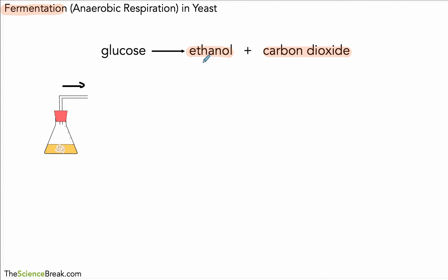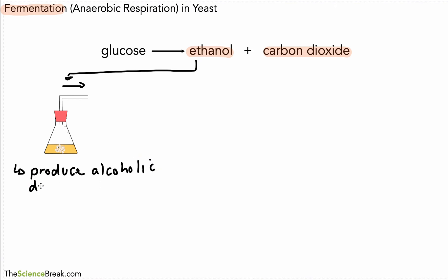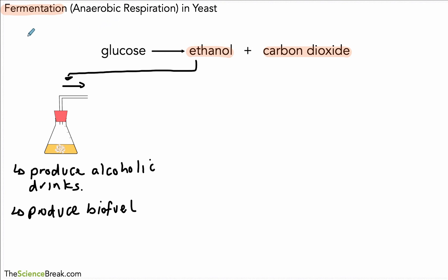Now ethanol is alcohol, so this process of fermentation can be used to produce alcoholic drinks — things like beer can be produced in this way. The ethanol can also be used as a fuel; the type of fuel we talk about is biofuel. So this ethanol that's produced can be burnt to produce a fuel. This is one use of anaerobic respiration in yeast, or in other words one use of fermentation.